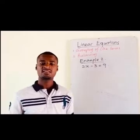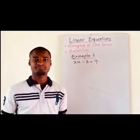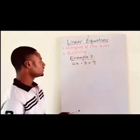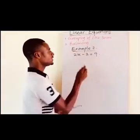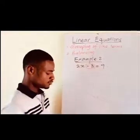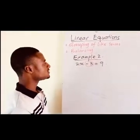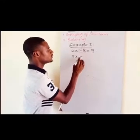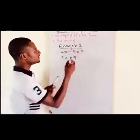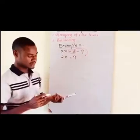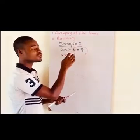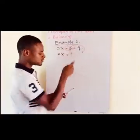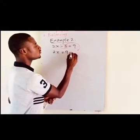We will also solve this example using the two different methods — grouping like terms first and then the balancing method. In grouping like terms, we will lift the number term at the left hand side to the right hand side. When we do this, we will be left with 2x at the left hand side, equal to 9 at the right hand side. We are lifting negative 3 across the equal sign, and once a term crosses the equal sign it changes to the opposite.